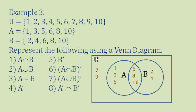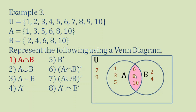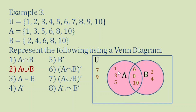Now we answer the questions. Question 1: A intersection B — the common elements between A and B — are 6, 8, and 10. Question 2: A union B — all elements inside A and B — are 1, 3, 5, 6, 8, 10, 2, and 4.